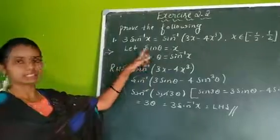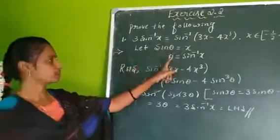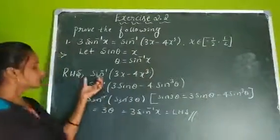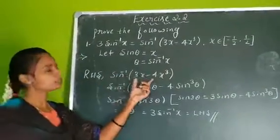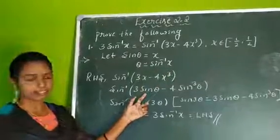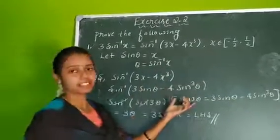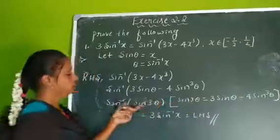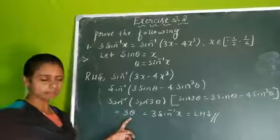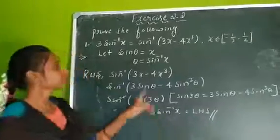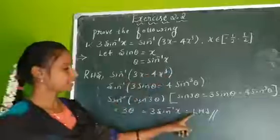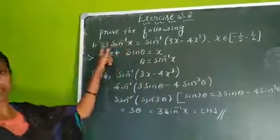To summarize: let sine theta equal x, so theta = sine inverse x. Take the RHS: sine inverse of (3x minus 4x cube). Substitute x = sine theta, and you recognize this as the sine 3 theta formula. Sine inverse and sine cancel, leaving 3 theta. Replace theta with sine inverse x, giving 3 sine inverse x, which equals the LHS. Proof complete.